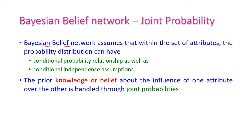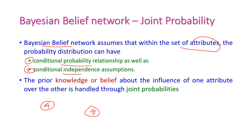The Bayesian belief network assumes that within a set of attributes, the probability distribution can have one conditional probability relationship and conditional independence assumptions. Here a and b are two attributes related to each other, where a is the independent one and the relationship is represented by an arrow. This is based on prior knowledge or belief about the influence of one attribute over the other, and this will be handled by joint probabilities.